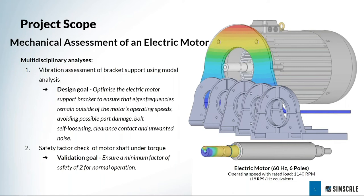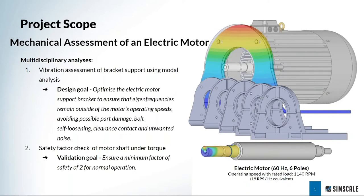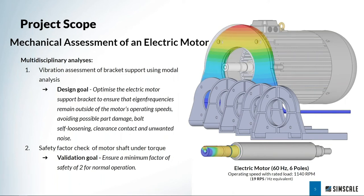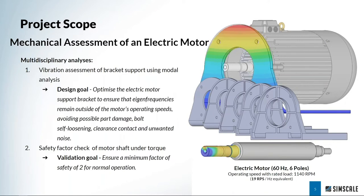The first thing we will look at is the vibration assessment of the supporting bracket for the electric motor. That is a very critical component because if we excite vibration of that support structure it can produce some really serious problems in the assembly — clearance issues, touching, noise, bolt self-loosening, and the whole thing falling apart. We can do some fairly simple analysis to mitigate the chances of exciting resonance of the supporting bracket, and we will look at some geometry changes to mitigate that dangerous vibration around the speeds of the rotating shaft.